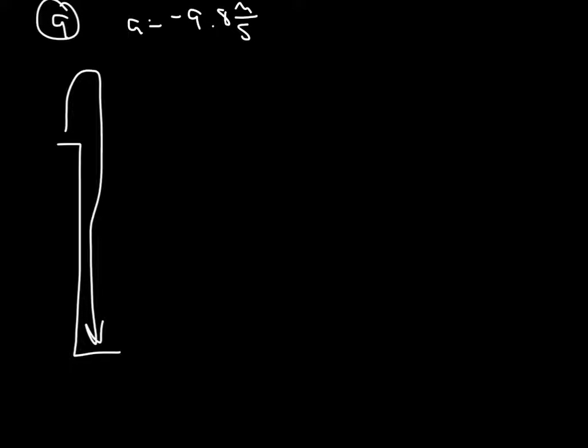Problem number nine. We have a building where a softball is tossed upward, then of course it goes down. We can always write in a free-fall problem, again, a free-fall problem is a problem where the only thing that's acting on the ball after release is gravity. So we can always say the acceleration is negative 9.8 meters per second squared.